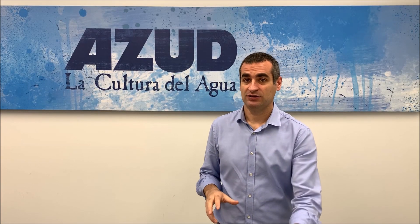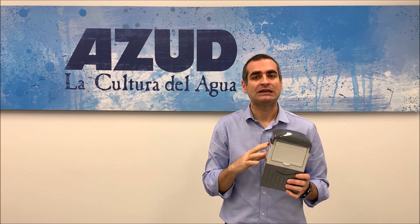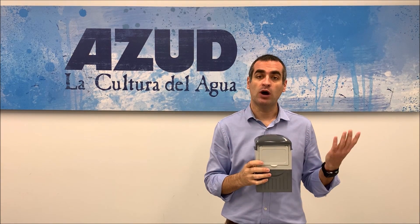First of all, I must tell you that I will speak about the Talgill controller that is the most common for irrigation purposes. We have other models for industrial or special applications. We have two different models, one 220 volts and the other one 12 volts. The 220 volts is AC, the 12 volts is DC.